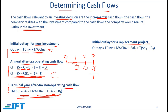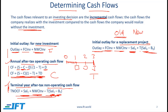With a replacement project, the annual operating cash flows and terminal cash flow calculations remain the same; the difference is in the initial outlay. The initial outlay equals the new investment plus net working capital, minus the salvage value of the old machine being sold — since money coming in is shown as a negative in an outlay — plus t times (salvage value minus book value) of the old equipment. This last term is the tax paid on any gain, and since we are computing an outlay, the tax paid is shown as positive.